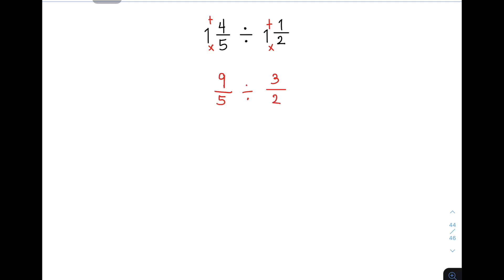And then, as you can see, okay na meron tayong proper fraction. Next step natin is to copy your dividend, 9 over 5, change your operation to multiplication, and get the reciprocal of this fraction. You have 2 over 3. Ngayon, you observe mo, yung 9 at 3, para silang may factor na 3.